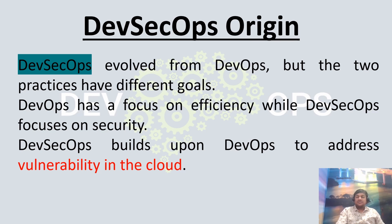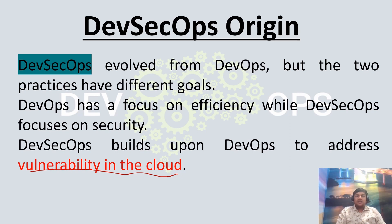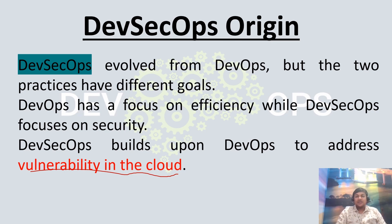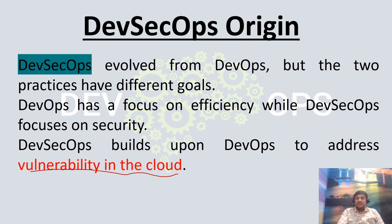DevSecOps builds upon DevOps to address vulnerability in the cloud. It is introduced to detect security concerns in code well before — during the development phase itself. When we adopt a DevOps culture, we are building fast and delivering fast, following an agile model with sprints or scrum, deploying every two to three weeks. During this process we mostly forget about security. That's when DevSecOps comes into the picture, helping detect security vulnerabilities in the code or platform early, before deployment or before it goes to the client.